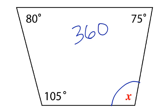we can see that on this quadrilateral, we have 105 degrees, we have 75 degrees, and we have 80 degrees. And we need to find out what the last degree measurement is. So,